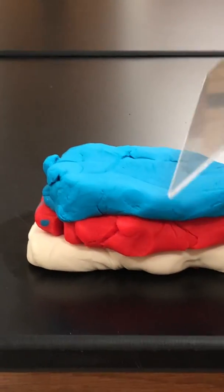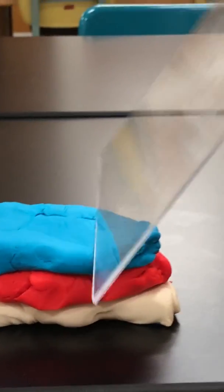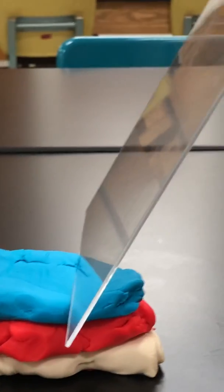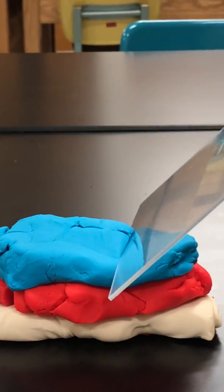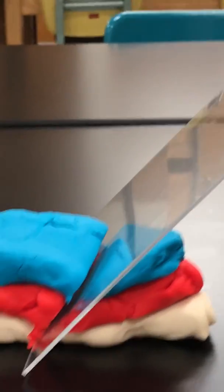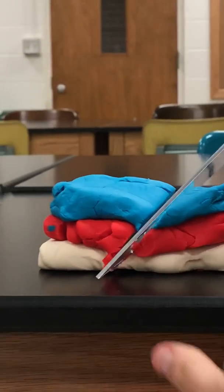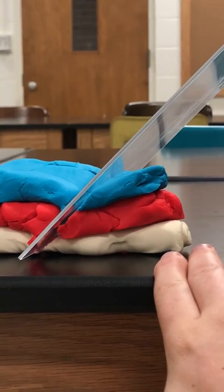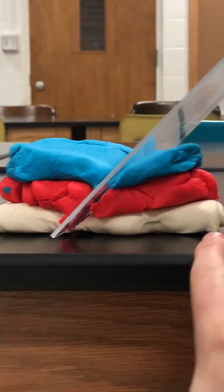Thrust faults tend to be pretty shallow, or at least more shallow than normal faults, so I'm gonna try and push that down. So this is my thrust fault—it has cut my play-doh layers—and now I need to have some slip or displacement to offset these layers.